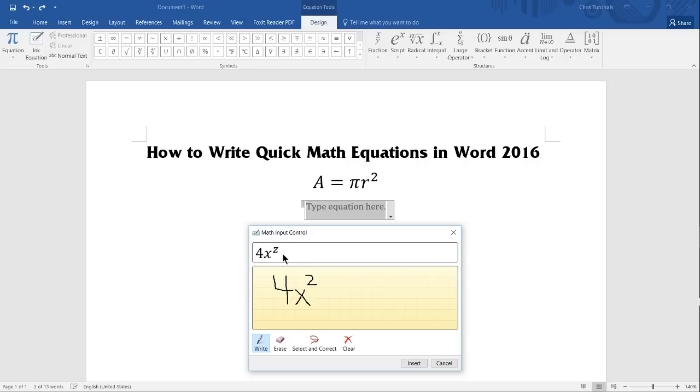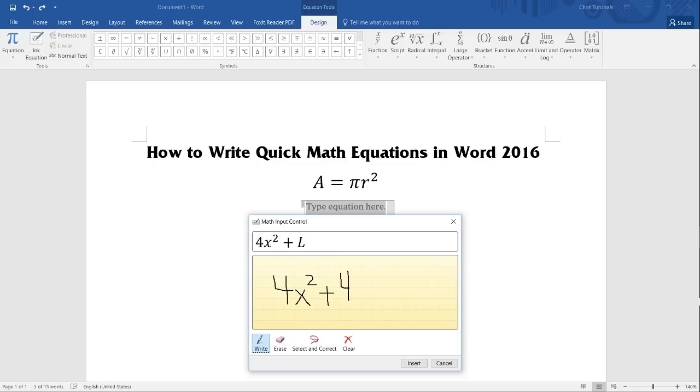Now you can see here that Word isn't perfect about it. My 2 looks like a Z to it. So we can use the select and correct tool on that to actually make that a 2. And now we can continue our equation. So simple algebra, maybe we do like a plus 4y here, equals, and let's say 22.